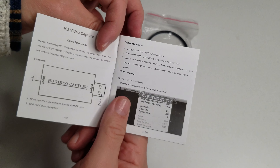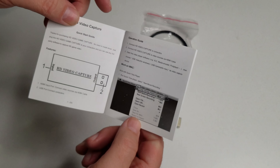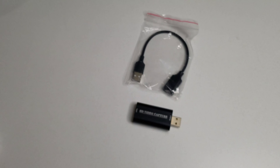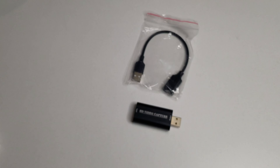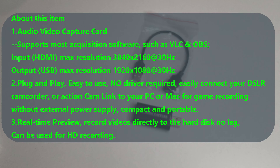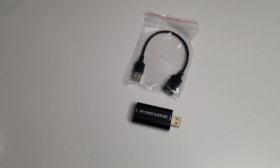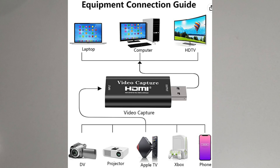You also get a booklet walking you through everything step by step, so if you have any questions it's all right there. To go over some quick things to know: this is your HDMI input port, and that connects to your video source via an HDMI cable — note that the cable is not included, so you'll need to have one. Your USB port connects to your computer.